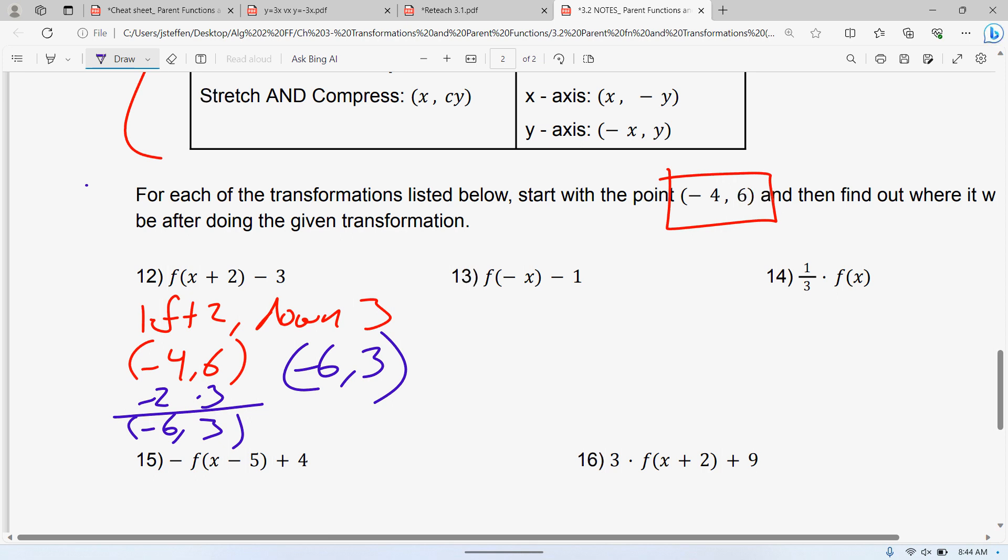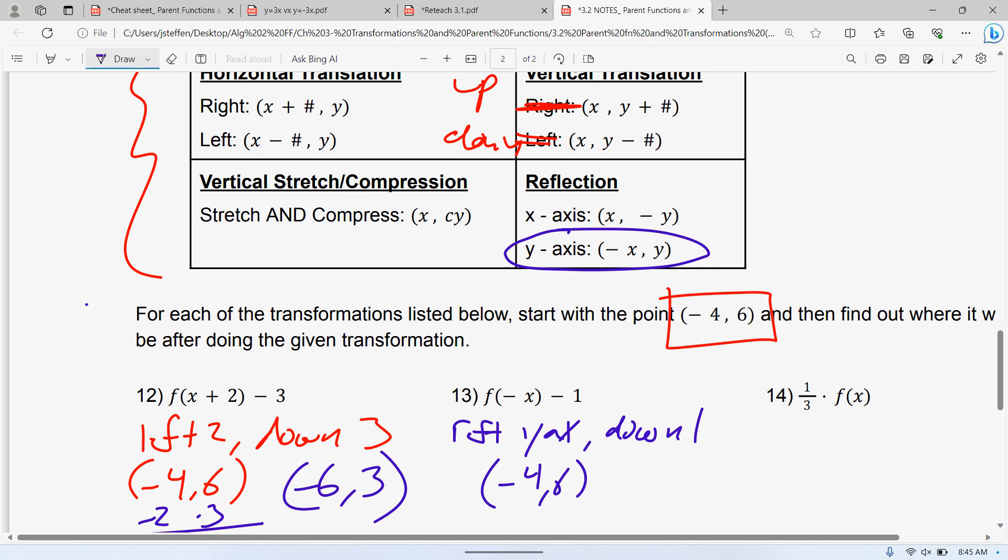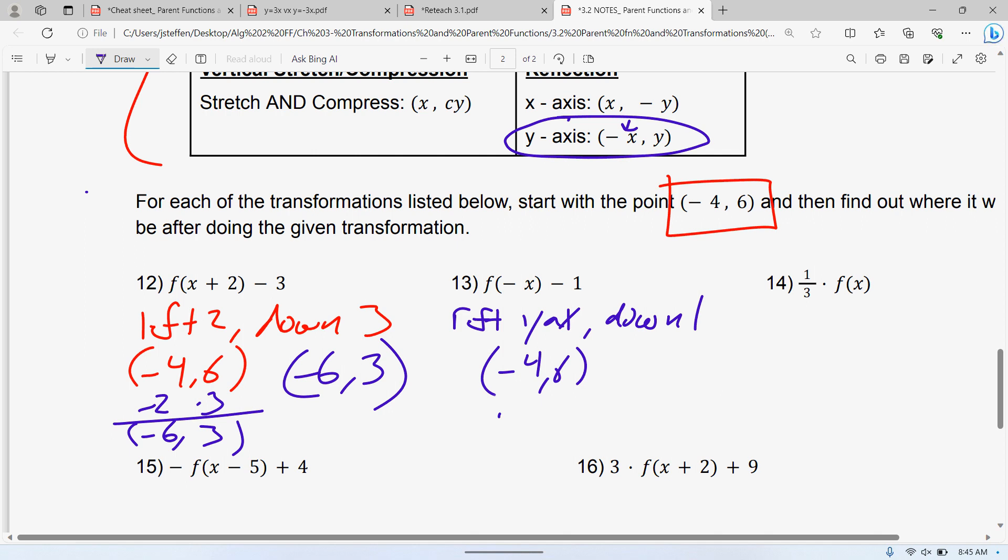We have a minus x inside your parentheses. So it's inside your parentheses. That's a y-axis reflection. Minus 1 is down 1. And we have negative 4, 6 is where we're starting. If it's reflected across the y-axis, again, if you look at your table, a y-axis reflection is we make the x into its opposite. So negative 4 turns to positive 4. And the y-value, we go down 1 so you're subtracting 1 from your y-value. So that's 4, 5.